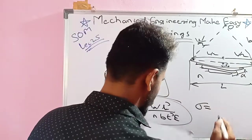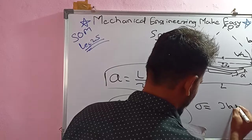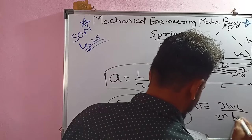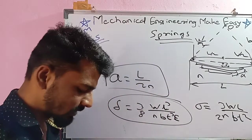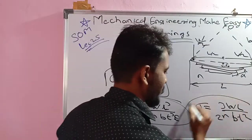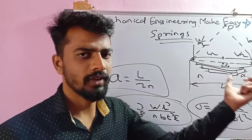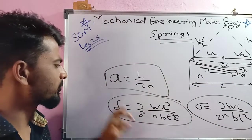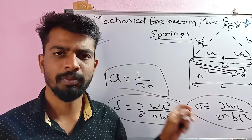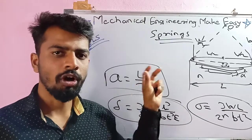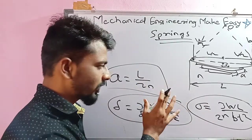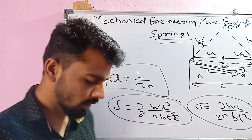The maximum bending stress in the leaf spring = 3WL divided by (2n b t²), where W is load, L is span, n is number of leaves, b is width, and t is thickness. These are all the important formulas for leaf springs. All these formulas are important for exams like GATE.